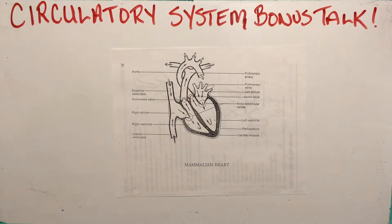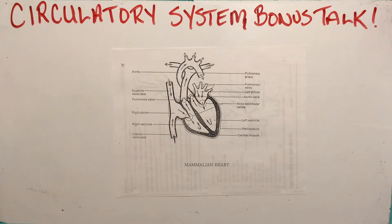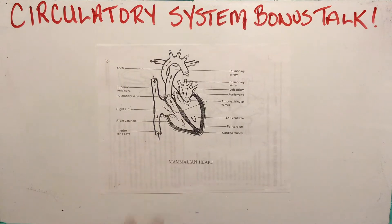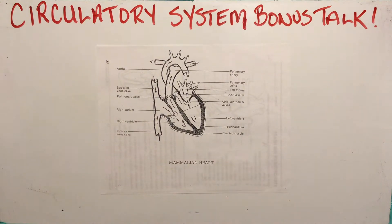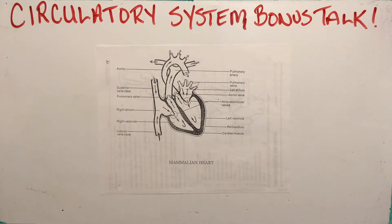All right, Biology 11. I wanted to put together a little bonus lecture here to help you prep for the circulatory system quiz tomorrow. A lot of the stuff we've already talked about, but I'm just going to go a little bit more into detail and remind you of some things. This handout, the mammalian heart, was added to your Edsby wall today and it's got all the same parts on it that we talked about in the previous video.